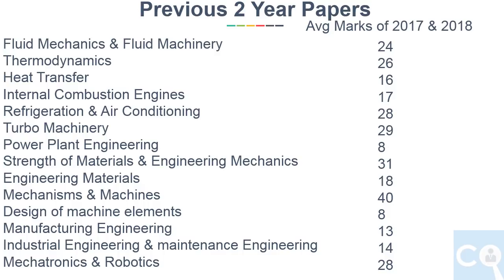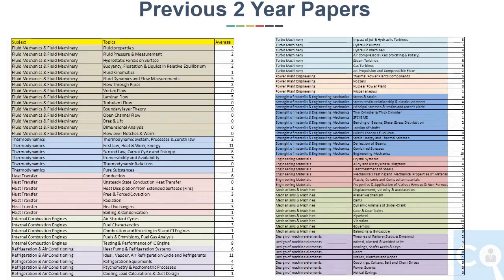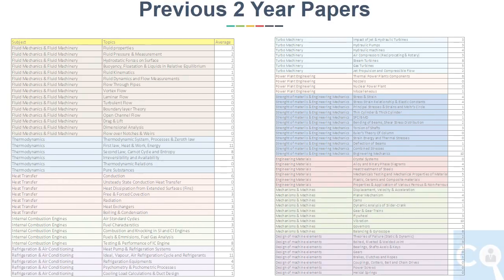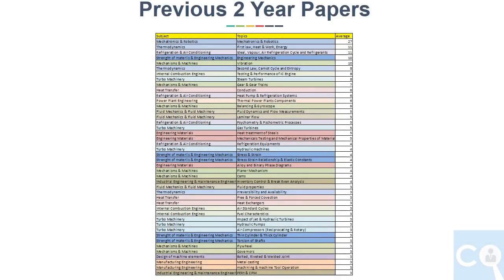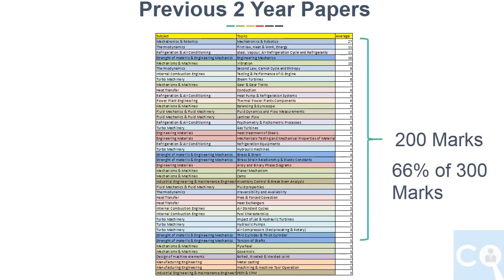Now, subject-wise, from the last two years, average marks for these subjects will be as follows. Let's break this down to each topic as well and see the average marks asked in individual topics for the last two years. Sorting from highest to lowest marks, if you take the initial 30 topics, the total comes to around 200 marks, which is 66 percent of total marks — corresponding to our 80/20 rule. We have to concentrate more on these 30 topics. I will share this Excel in Google Drive; its link will be given in the description.